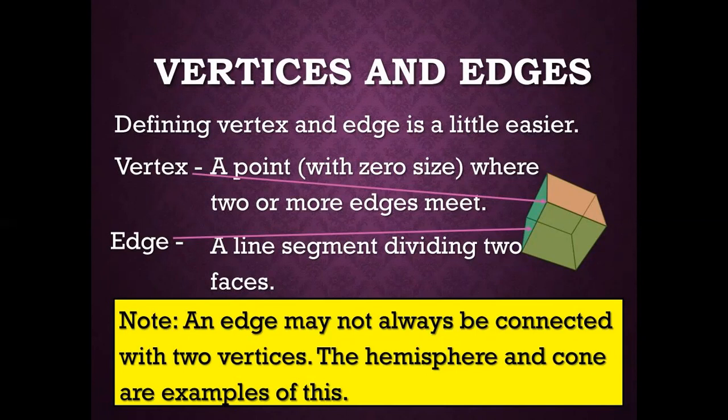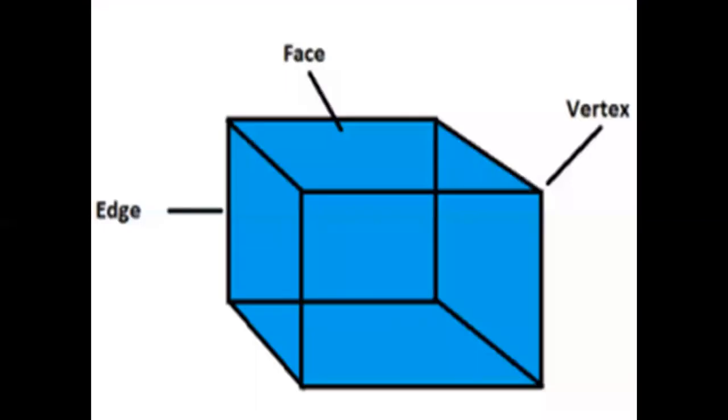First, let us learn about cube. The length, breadth and height of a solid shown in the figure are same. Therefore, it is known as a cube. Example, dice. In a cube, length, breadth and height are same. It has 6 faces, 12 edges and 8 vertices. Side shape and base shape are square.